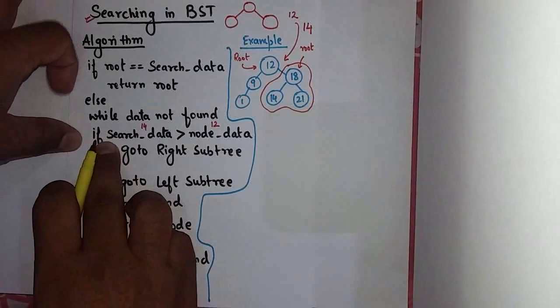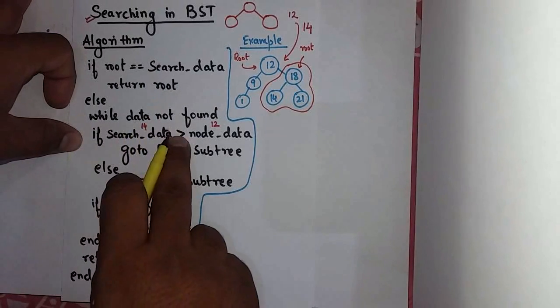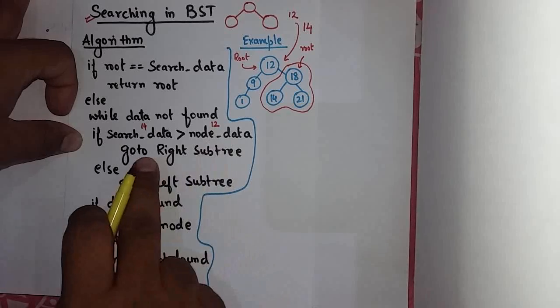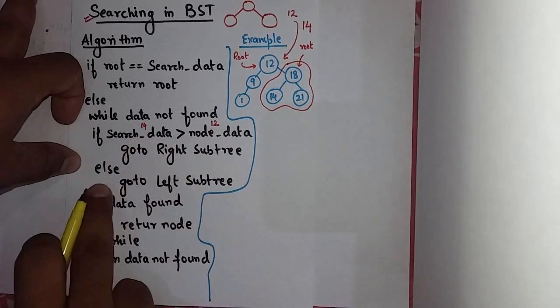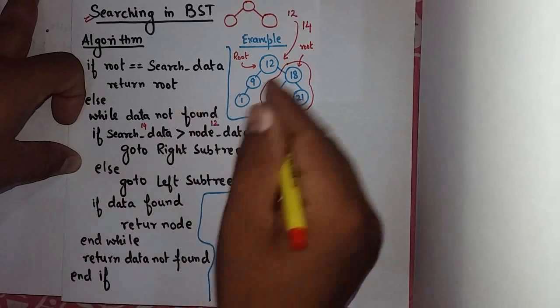Again, 18, if you're going to search, here's the number 14. This is greater than 18. No. So now it will go in the left subtree.